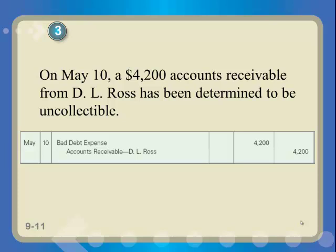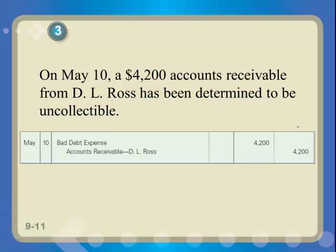The direct write-off method is the easy one. Assume on May 10th, $4,200 of accounts receivable from D.L. Ross has been determined to be uncollectible. We just take it out of their receivable with a credit — that reduces receivables — and we debit bad debt expense, which increases it. So bad debt expense goes up and it's taken out of accounts receivable. Pretty easy.